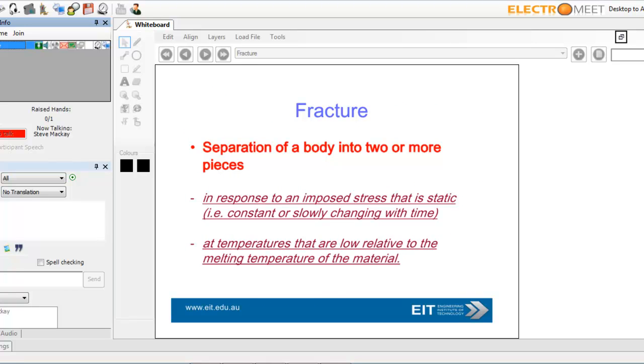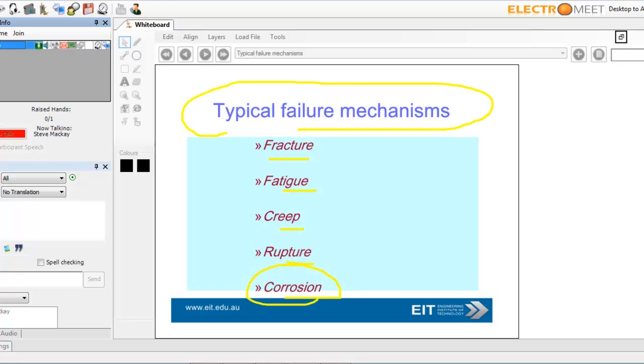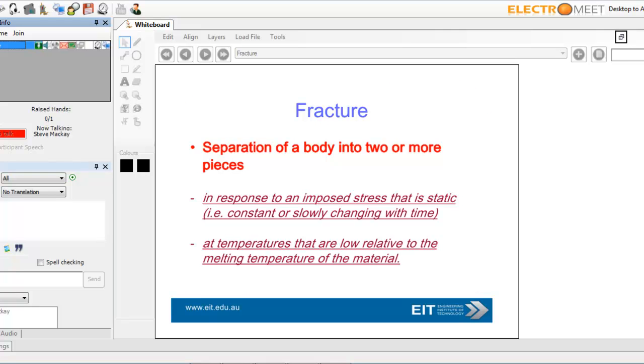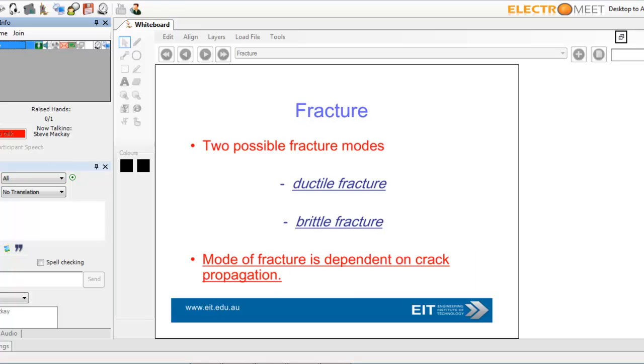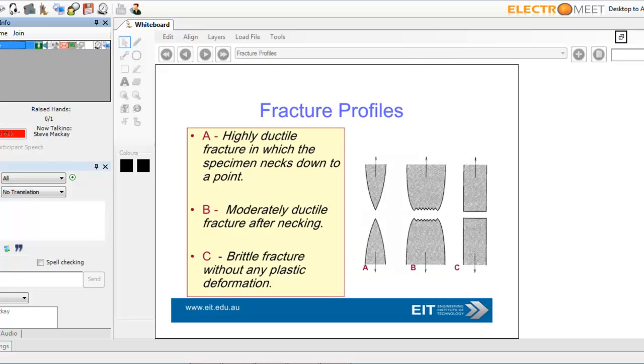Fracture - just to look at those terms in a little bit more depth. Fracture is separation of a body into two or more pieces. Two possible fracture modes: ductile fracture or brittle fracture. Here are fracture profiles - that's highly ductile, and moderately ductile, and of course, brittle fracture. Basically, pulls apart and breaks immediately.